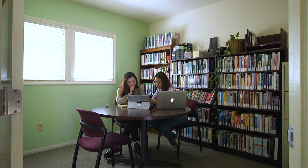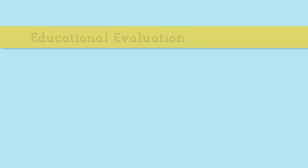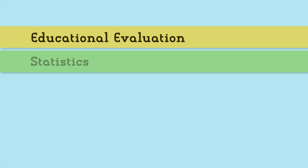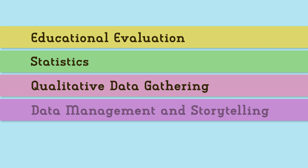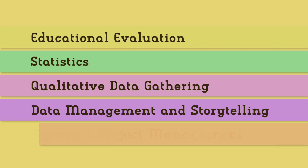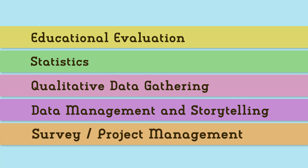The typical pathway through the program for an EEDA student will be they'll start with educational evaluation and have an introduction to data methodologies. They'll move into that by taking a course in statistics and then a course in qualitative data gathering, which is about learning how to do focus groups and interviews. At that point, they'll move into data management, leveraging your data, which is about data storytelling. They also take a course on how to do their own survey on a project management schedule.